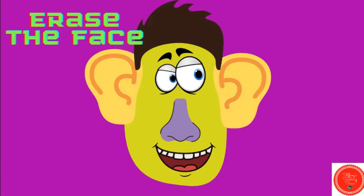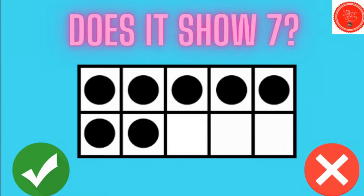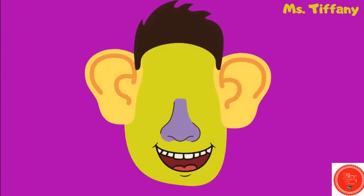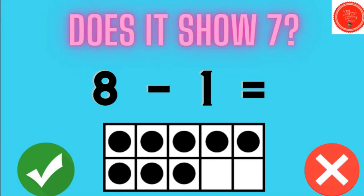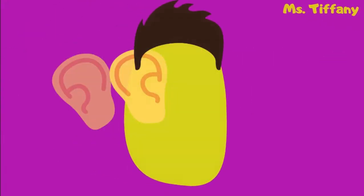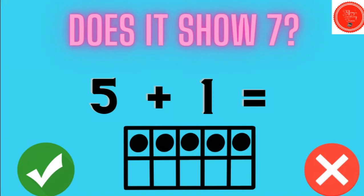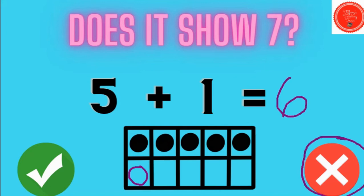It's time to erase the fake. Does it show seven? Yes, this is seven — this is what it looks like on a ten frame. Does it show seven? Right now we have eight. If I cross out one, does that leave me with seven? Yes. Eight minus one equals seven. Does it show seven? We have five in this ten frame. Five plus one — if I add one more, does that give me seven? It does not. This gives me six. This does not show seven.